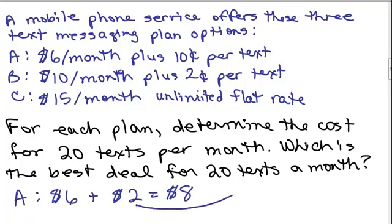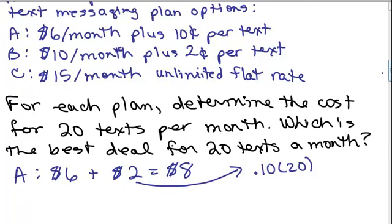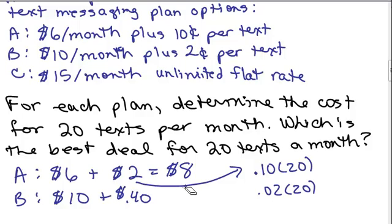You have to do the charge per text by how many texts you have. What about Plan B? Plan B is $10 a month plus 2 cents per text. So 2 cents and you had 20 texts, that's 40 cents. We add that up, that would be $10.40.